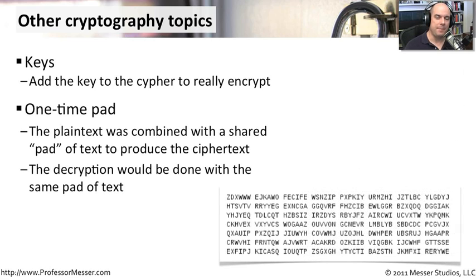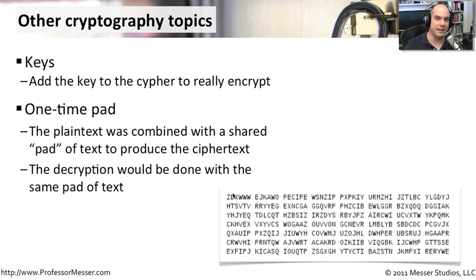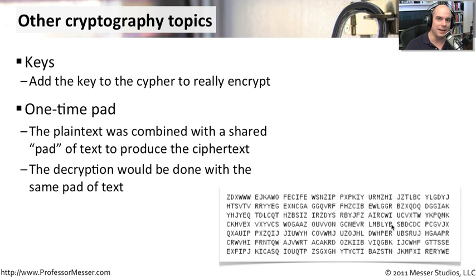Another cryptography technique is the one-time pad. You have a page of letters, with an identical page on the other side. The person encrypting combines the first letter of the pad with the first letter of the message to produce ciphertext, then the second letter of the pad with the second letter of the plain text, and so on — going all the way through the message. This is very difficult to decrypt unless you have the exact same pad. You use that pad one time, then discard it and use a completely new one for the next message. Even if the first message is decrypted, someone would have to start all over again to decrypt the next one.